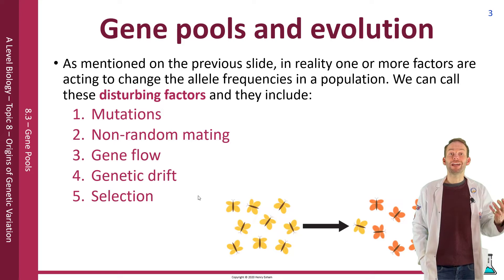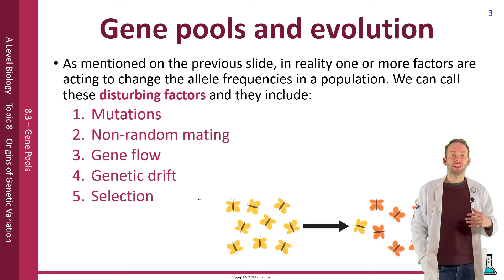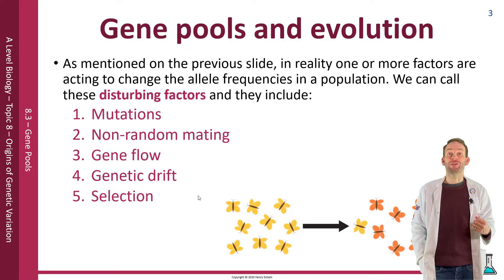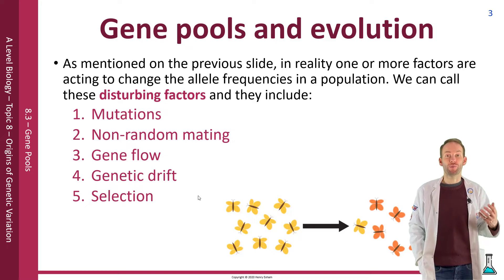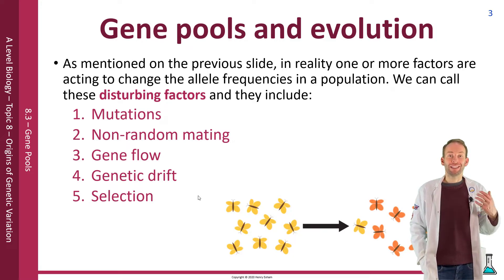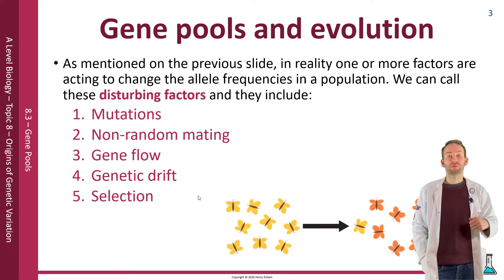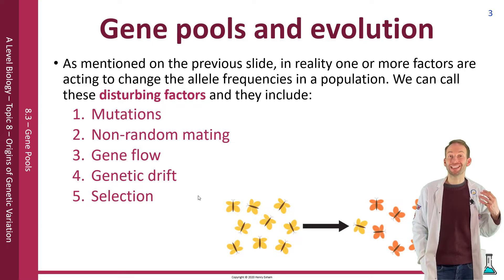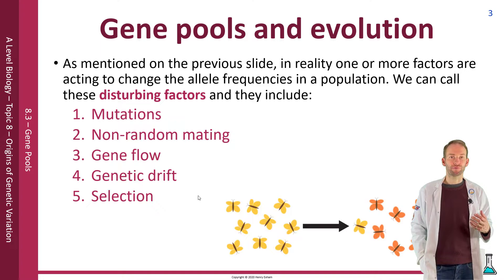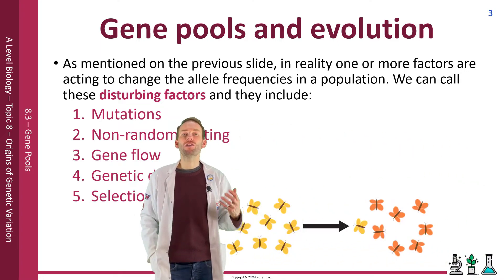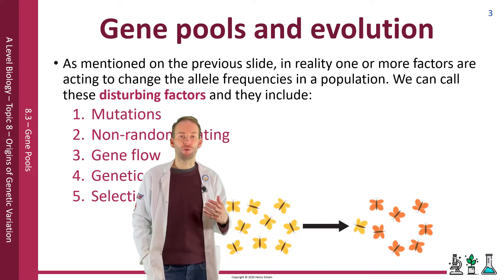There are various disturbing factors that act to change the allele frequency in a population. These include mutations, non-random mating, gene flow, genetic drift, and selection. We'll go through them one by one.